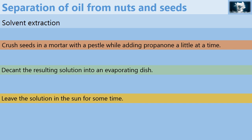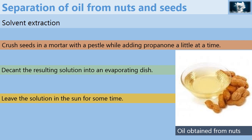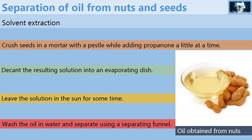Since propanol is volatile it will evaporate under the heat of the sun leaving behind the oil which is less volatile. Then finally you can wash the oil in water and separate using a separating funnel. The washing helps to remove any propanol that may have remained in the oil. And since water and oil are immiscible you can easily separate them using a separating funnel.